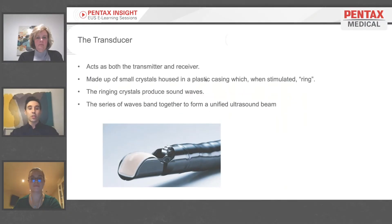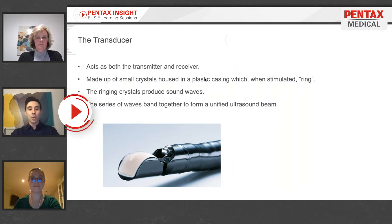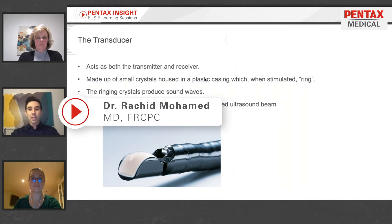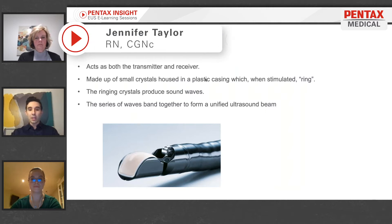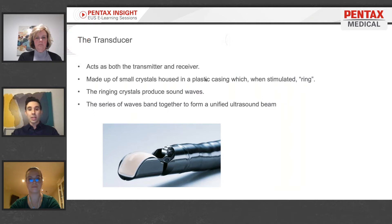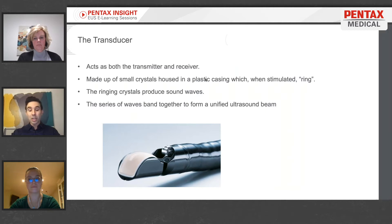What is in the transducer? The endoscopic ultrasound scopes house a small transducer made up of tiny crystals that, when stimulated, will ring. That ringing is what emits the endoscopic ultrasound wave. That wave transmits from the tip of the endoscope or probe into the adjacent tissue being targeted by the endoscopist. Those waves ultimately band together to form one unified beam that is received back into the probe, and an image will be generated.